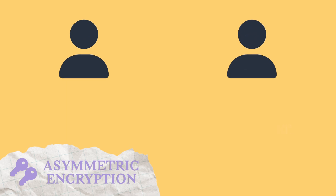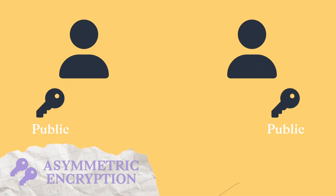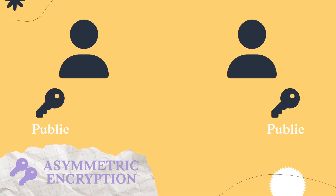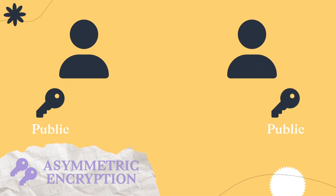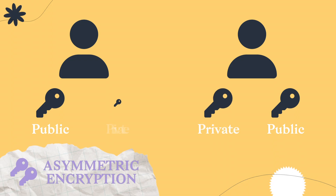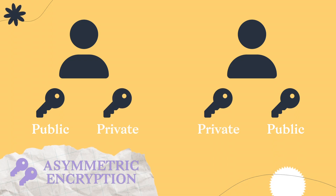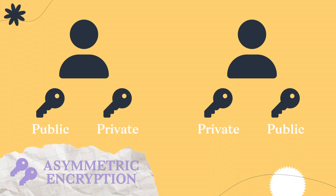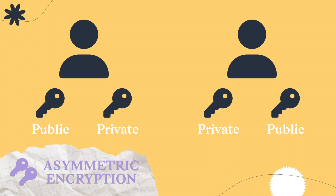With asymmetric encryption, each person has a public key they share with others that lets them receive encrypted messages, and a private key they keep to themselves that lets them decrypt the messages they receive.